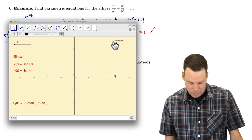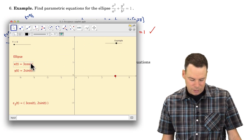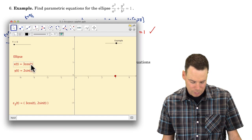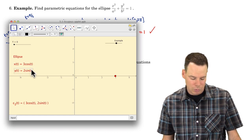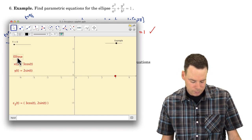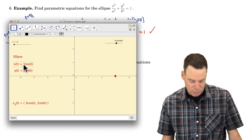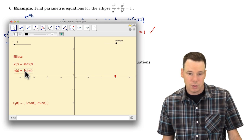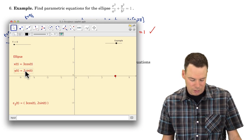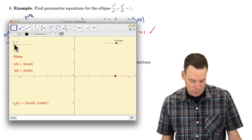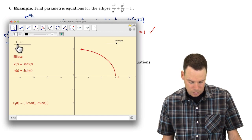And then we just looked at an ellipse, where instead of worrying about what's going on with the argument, we kept the argument just as t in both cases, but we changed the amplitude. So this one here is going to make an ellipse where along the horizontal axis it's stretching out to 3 and negative 3, and along the vertical it's only stretching up to 2 and down to negative 2. So it's going to be wider than it is tall. And so there's our ellipse.